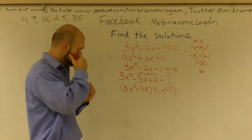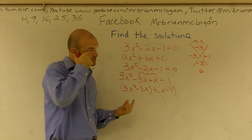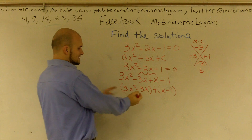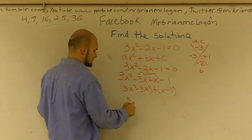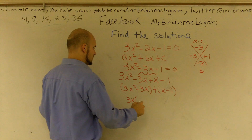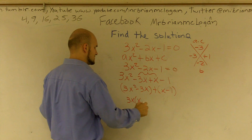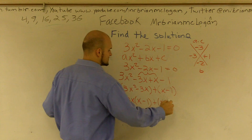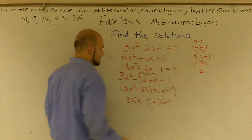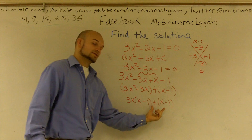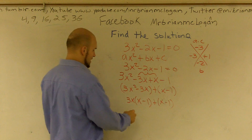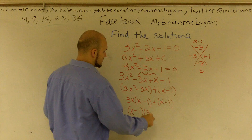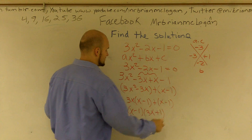I can group them. I can put parentheses around the first two terms and the last two terms. This is helpful because now I can factor out a 3x, which will give me x minus 1, plus x minus 1. Then I notice that these two terms are exactly the same, so I can factor them out. I'm left with x minus 1 times 3x plus 1.